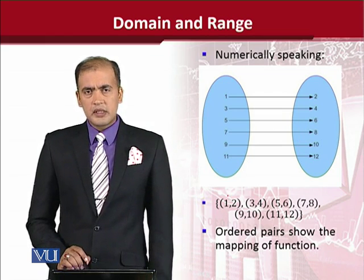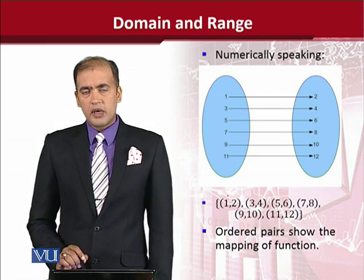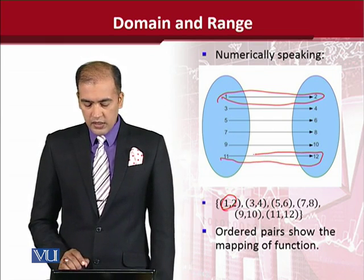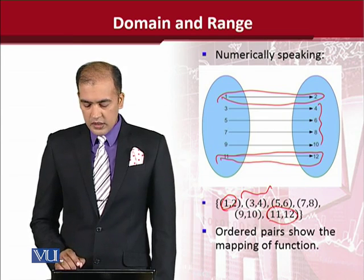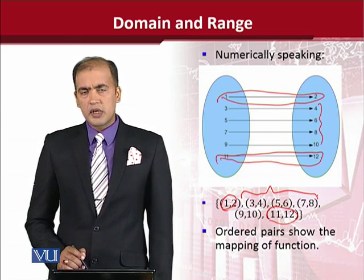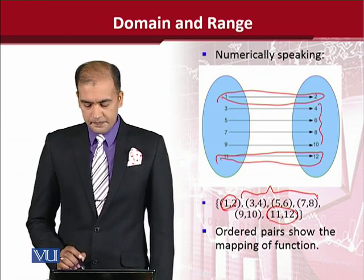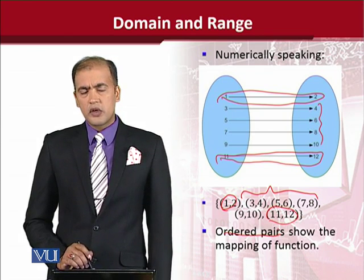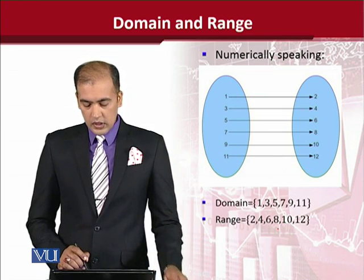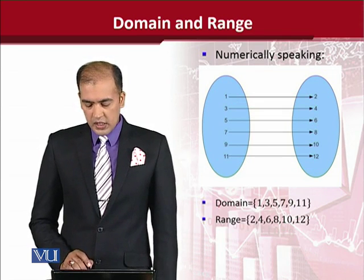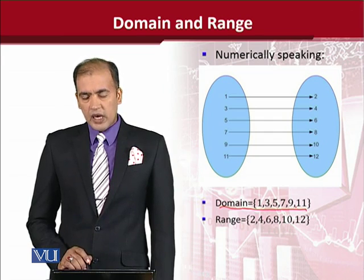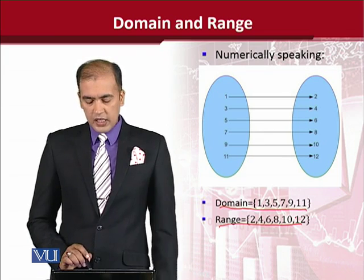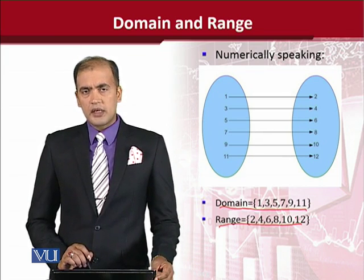We can write these values as ordered pairs and make a set of them. For example, (1, 2) and the final one would be (11, 12), and the remaining pairs are written in between. We can write them in the form of ordered pairs — you must remember that x comes first before y. These ordered pairs show the mapping of the function in an enumeration sort of way. The domain can be extracted and written in curly brackets separated with commas, and the range can also be extracted and written in a similar way.